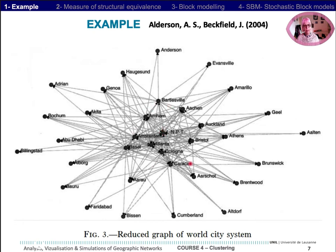Then, a first set of cities around the core, and then a periphery around the entire system, linked to the core or the semi-core of the system.